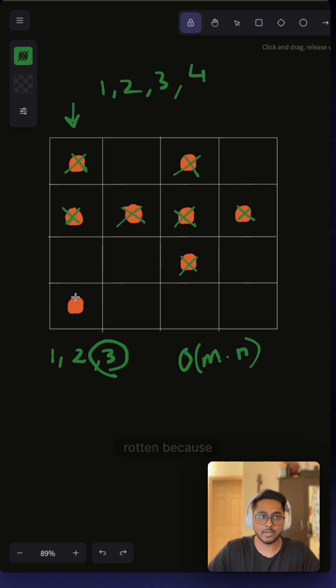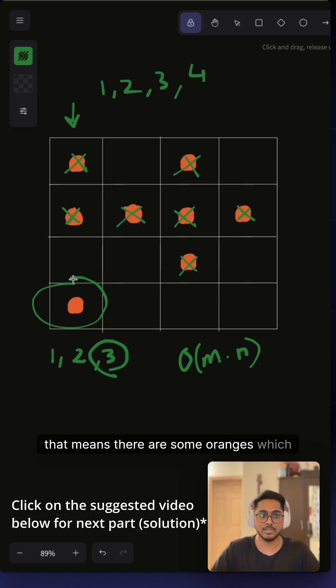This orange will never turn rotten. It's not adjacent to any of the rotten oranges. So we are going to track the number of fresh oranges we have initially, and by the time our BFS ends we can see if the count of oranges is not zero, that means there are some oranges which are not rotten, and in that case we will return minus one. So let's see how we can solve this.